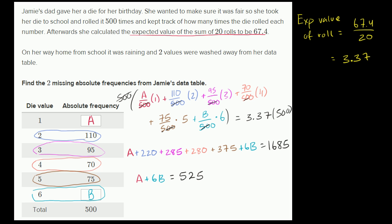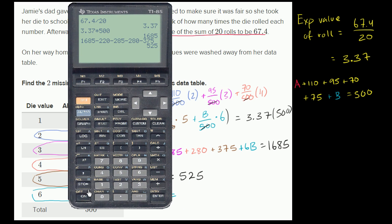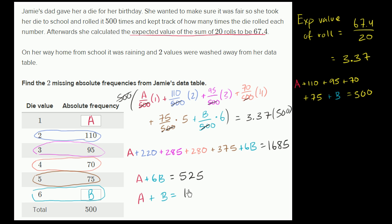Or, let me write that down. So we know that A plus 110 plus 95 plus 70 plus 75 plus B, needs to be equal to 500. Or we could subtract 110 plus 95 plus 70 plus 75 from both sides, and get, if you subtract it from the left-hand side, you're just left with A plus B. And on the right-hand side, if we start with 500, so 500 minus 110 minus 95 minus 70, gets us to 150. So A plus B must be equal to 150. Is equal to 150.